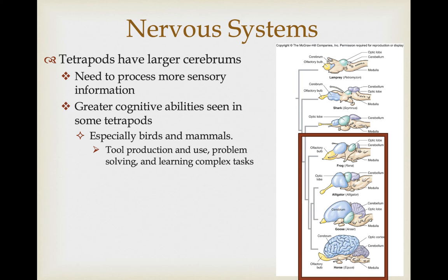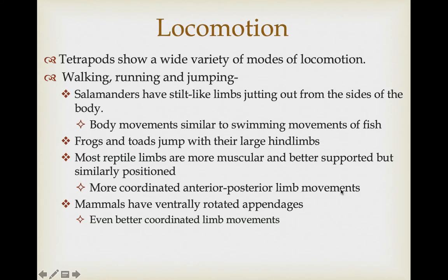There is a general pattern of larger brains evolving in later tetrapod lineages, associated with the need for greater processing of more sensory information and greater cognitive abilities. This is particularly true of birds and mammals, in which tool use — both production and use — is commonly seen, along with problem-solving and learning of complex tasks. Locomotion is highly variable in tetrapods — most can walk, run, and jump. The earliest forms were inefficient: salamanders, with limbs jutting out from the sides of the body, moved more like swimming fish on land with sinusoidal body twists and little independent limb movement.